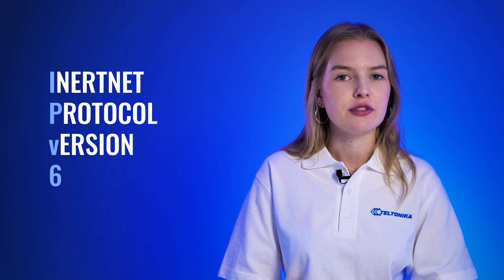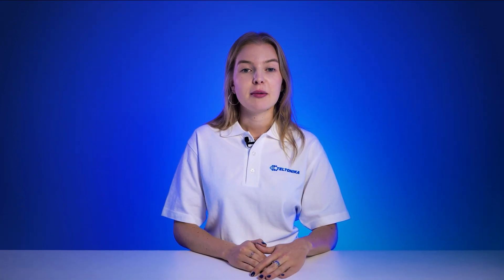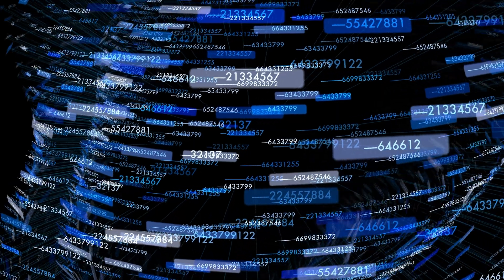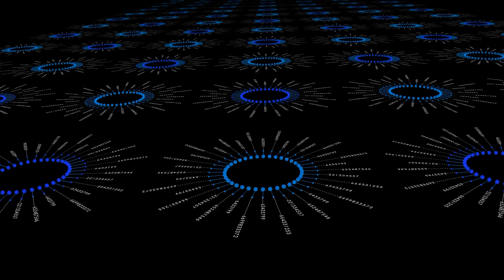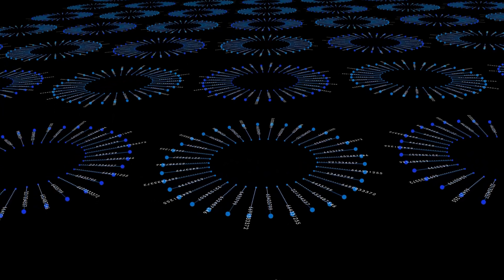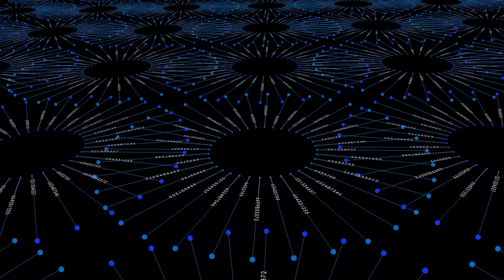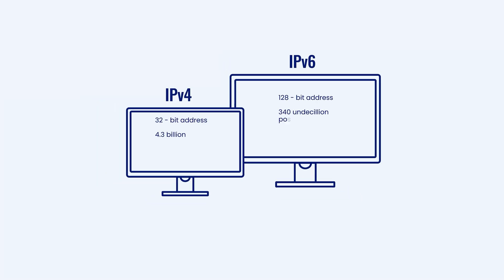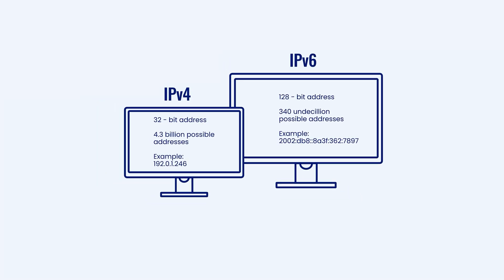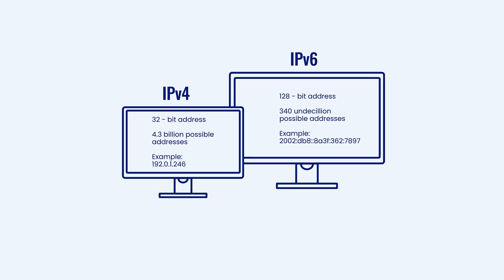IPv6, or Internet Protocol version 6, is the successor to IPv4. The main goal of both IPv4 and IPv6 is to give devices a way to be identified and located on the internet, similar to how a name identifies a person. However, the number of connected devices has grown rapidly and IPv4 is running out of available addresses. To address the shortage and support growing demand, IPv6 was introduced, offering a much larger pool of IP addresses than IPv4.